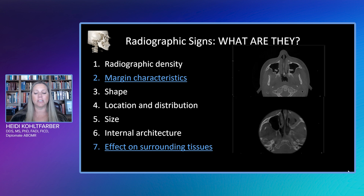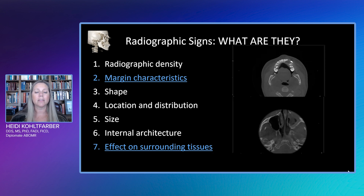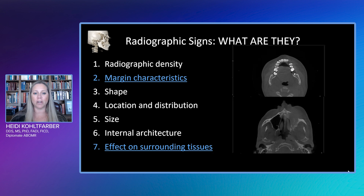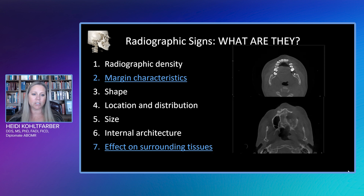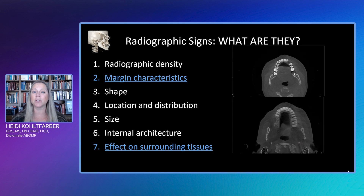One of the things I want to point out when we review a CBCT is we want to look at our radiographic signs. So if you do find a lesion, these are the radiographic signs we're going to look at — keep these in mind as we go through the case. We can see radiographic density, marginal characteristics, shape, location and distribution, size, internal architecture, and effects on surrounding tissue. We're going to look at all of those things as we go through the lesion in the volume.